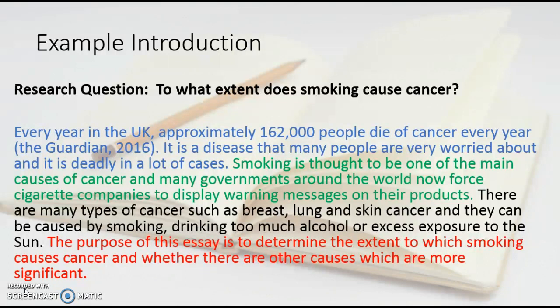Then in black: 'There are many types of cancer such as breast, lung and skin cancer, and they can be caused by smoking, drinking too much alcohol, or excess exposure to the sun.' These are the different types of cancer I will talk about in my essay — each of the three paragraphs covers one: smoking, alcohol, and excess exposure to the sun. Looking back at my question, 'To what extent does smoking cause cancer?' — I'll talk about smoking but compare it to other causes, and eventually in my conclusion I'll make a judgement. Then in red, the final thesis statement: 'The purpose of this essay is to determine the extent to which smoking causes cancer, and whether there are other causes which are more significant.' This makes it very clear to the reader exactly what I'm going to write about.